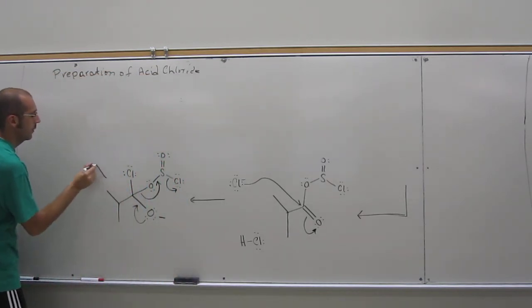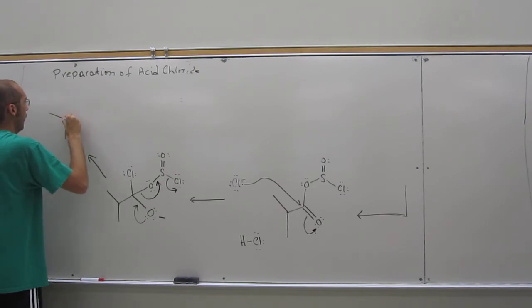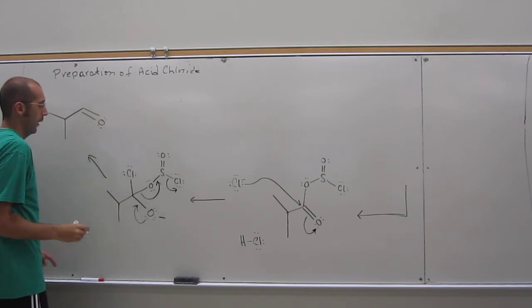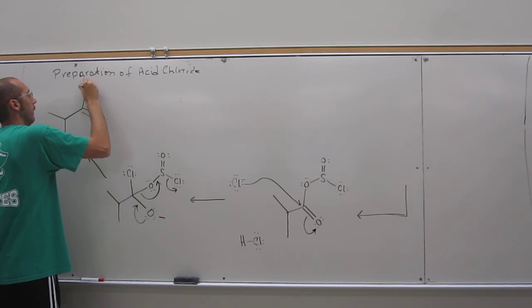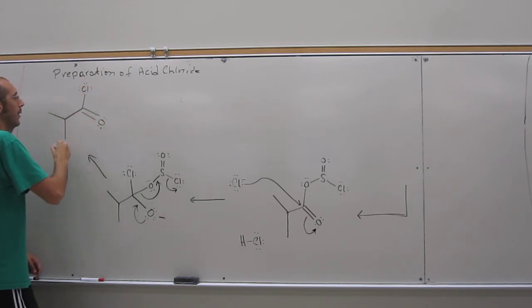I'm going to erase the top so I can finish this mechanism. Okay, so once that happens, we've made our acid chloride. And again, I'm going to keep it in that same conformation. This got kicked out, so we still have the chlorine there. So everybody sees that's the product we were going for, right?